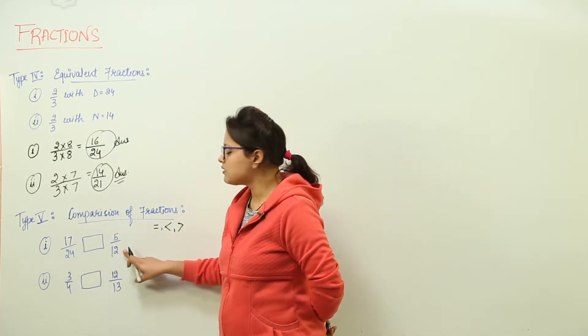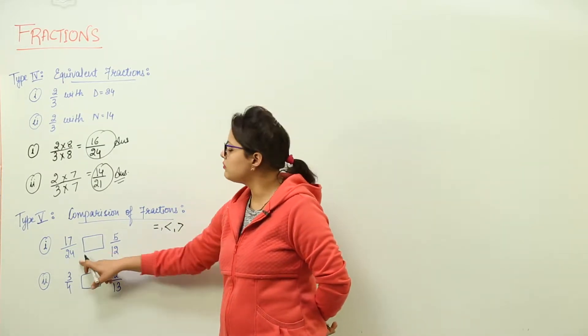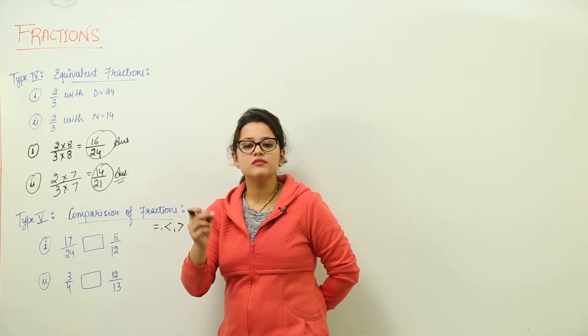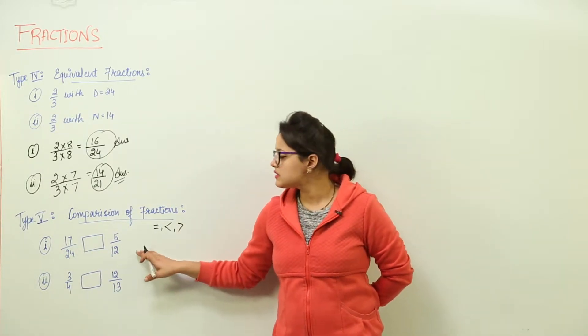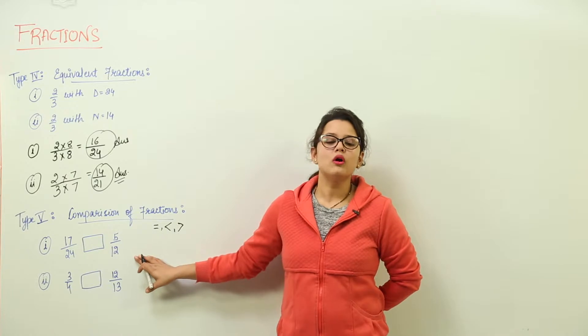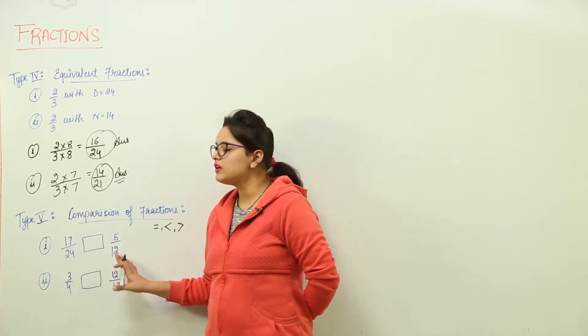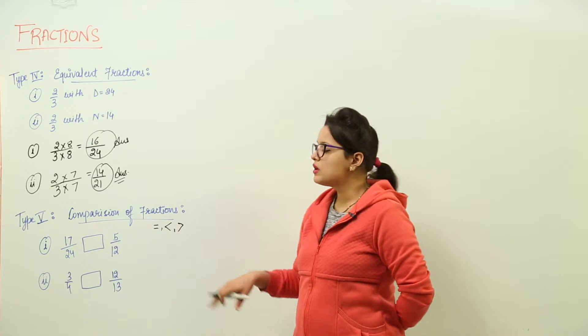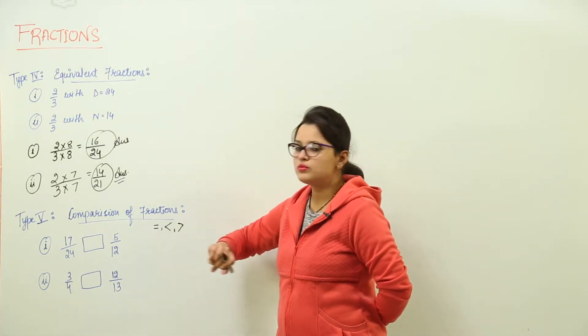If you look at the question right now, just like this, you will not be able to identify or tell in the first instance which one is greater or smaller or equal. Why? Because both are having different numerators and denominators. So what is the way to do this question?